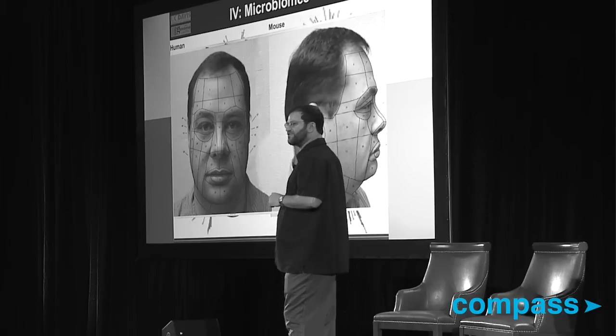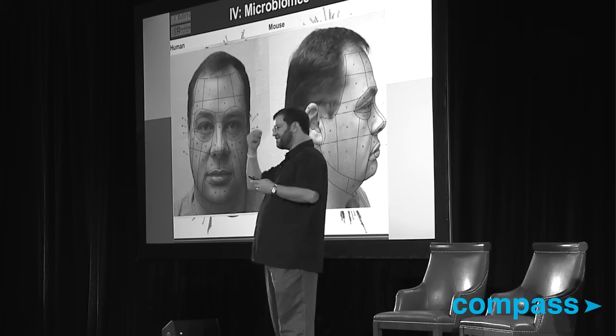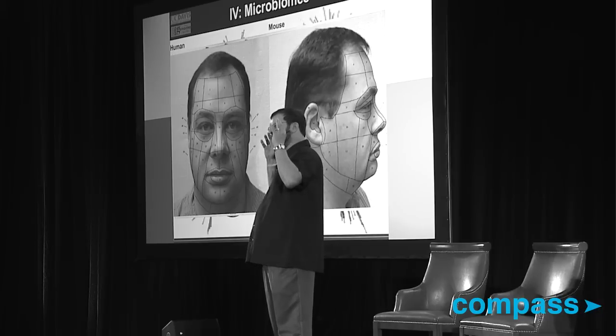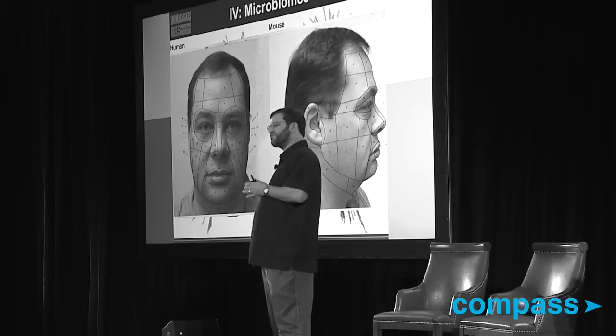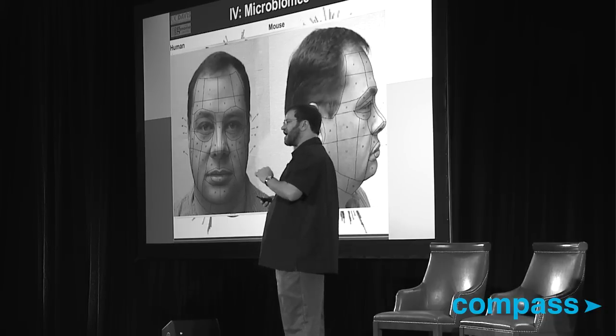A graduate student in Rob Knight's lab at Colorado actually had about 30 different places identified on his face, and they're treating his face as basically an ecosystem. They're surveying the microbes over time in different parts of his face to understand the micro-heterogeneity in the landscape and niche of the microbes that live on particular parts of the human body.